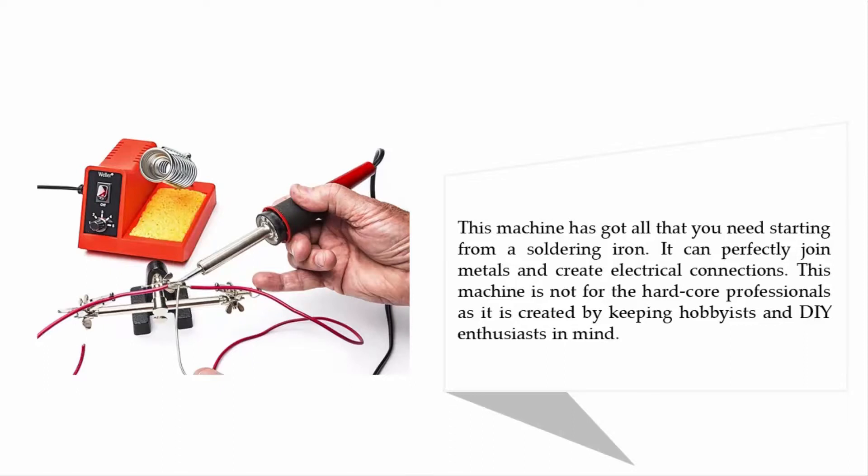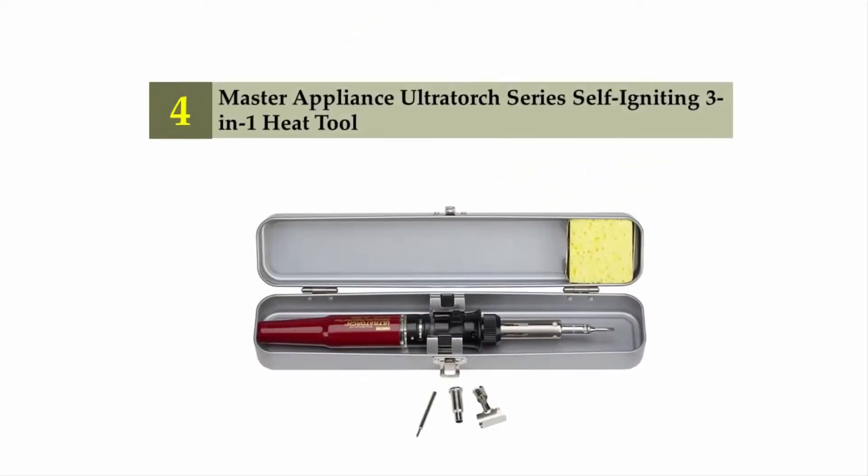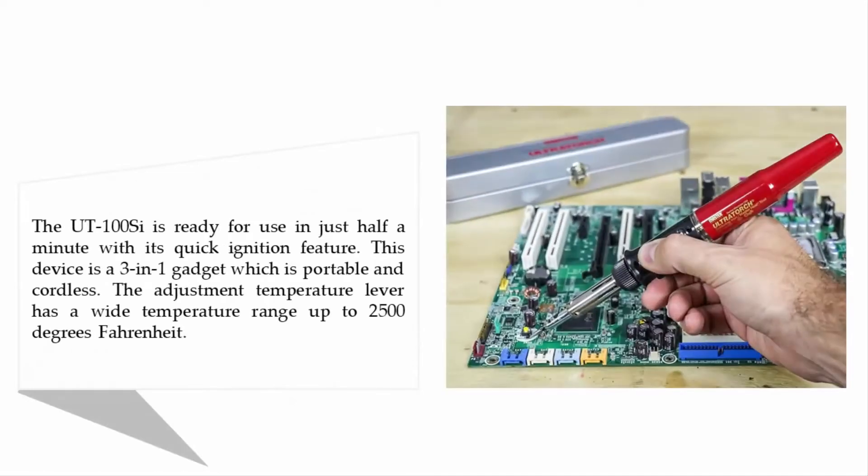Coming in at number four: Master Appliance Ultra Torch Series self-igniting three-in-one heat tool. The UT 100C is ready for use in just half a minute with its quick ignition feature. This device is a three-in-one gadget which is portable and cordless. The adjustment temperature lever has a wide temperature range up to 2500 degrees Fahrenheit.